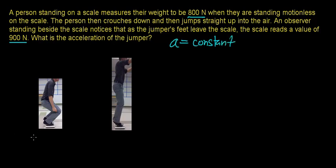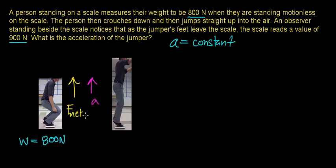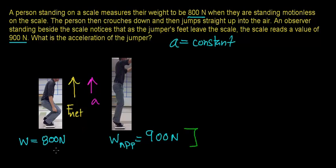Here's what's happening. When this person is standing motionless, their gravitational weight is going to be 800 newtons. A net force needs to act on this person, causing them to accelerate in the upward direction — they're going to accelerate in the same direction that the force is acting. That's what Newton's second law says: forces cause objects to accelerate in the direction of the net external force. When this force acts on this person, their apparent weight is going to increase — it's going to appear that they weigh 900 newtons because they press down on the scale, and in response the scale presses back up on the person. Using the gravitational weight and apparent weight as their feet leave the scale, we're going to figure out what the acceleration of this person is.